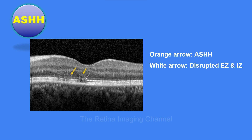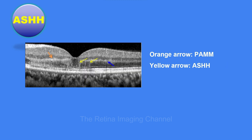Finally, let us see a couple of examples of ASHH in other retinal diseases. The first OCT scan shows hyperreflectivity of OPL and ONL in an angular fashion, marked with an orange arrow, and disruption of EZ marked by a white arrow — this is a case of ASHH due to blunt trauma, not AMN. The second image shows paracentral acute middle maculopathy (PAMM), with hyperreflectivity of the inner nuclear layer marked by an orange arrow, and a nicely visualized hyperreflective Henle fiber layer marked with yellow arrows along with disrupted EZ underneath. This is a case of PAMM with ASHH.